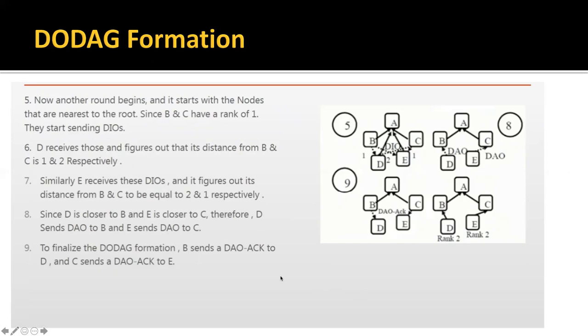This is how the DODAG has been formed and this is how this routing protocol works. Leaf nodes are generally non-storing nodes, and non-leaf nodes are storing nodes, including the root node. That's all related to RPL, which is the Routing Protocol for Low Power and Lossy Networks.